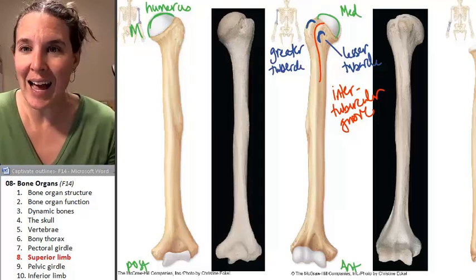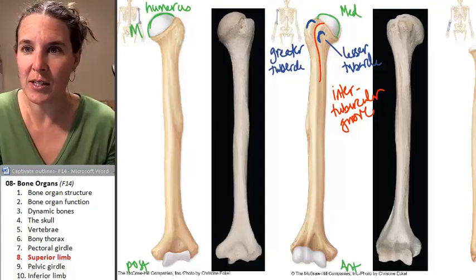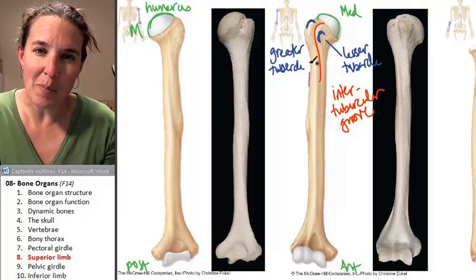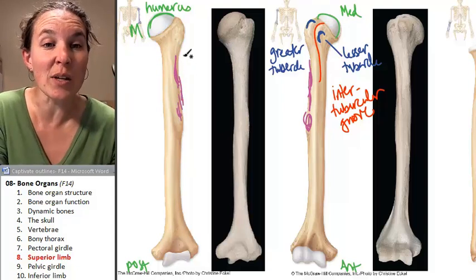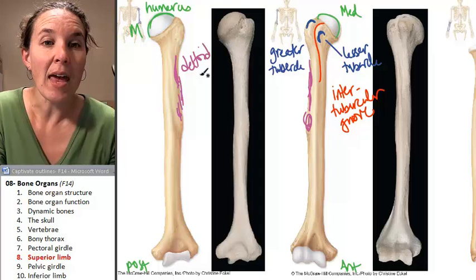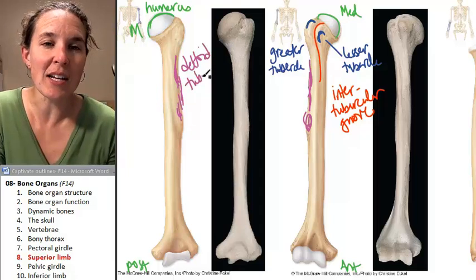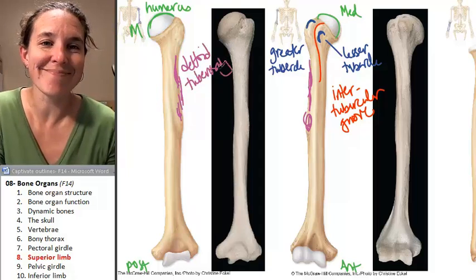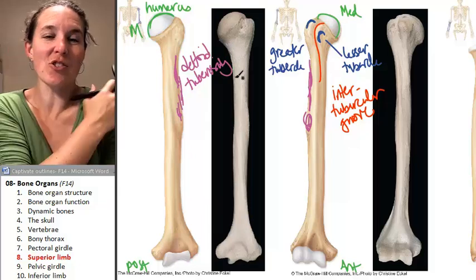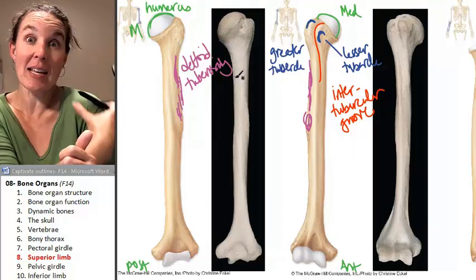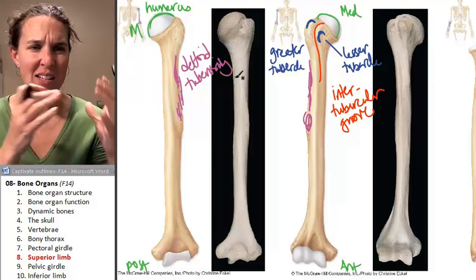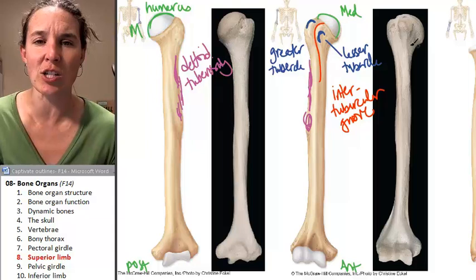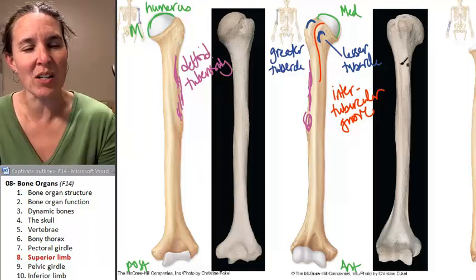On the lateral aspect of your humerus, there's a bumpy region that goes all the way down to a bump called the deltoid tuberosity. The deltoid muscle attaches there — it's your shoulder muscle, so it makes sense that it attaches to a lateral, bumpy area. It kind of smears onto the bone itself.